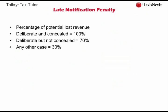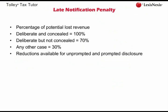A failure is deliberate and concealed where the failure is deliberate and the taxpayer makes arrangements to conceal the situation giving rise to the obligation. This would include creating false evidence of a non-taxable source of income, creating false invoices to support inaccurate turnover figures, or destroying books and records. A failure is deliberate but not concealed where the failure is deliberate but no arrangements are made to conceal the situation — for example, where a person is aware of the obligation to notify but decides not to do so without taking steps to conceal the income. Reductions in penalty are available for both unprompted and prompted disclosures.